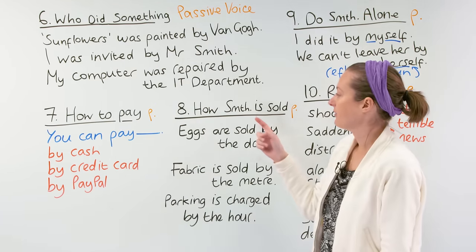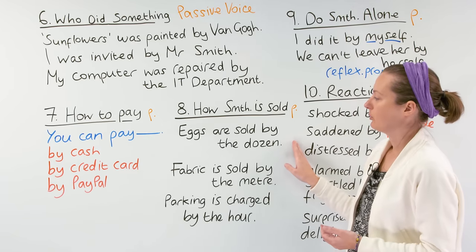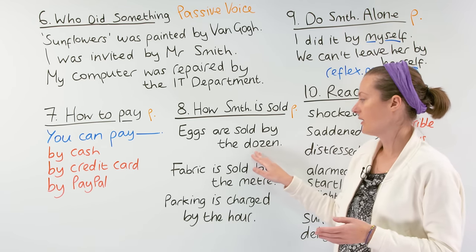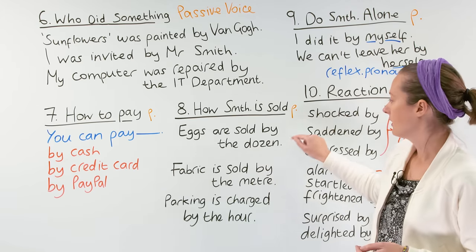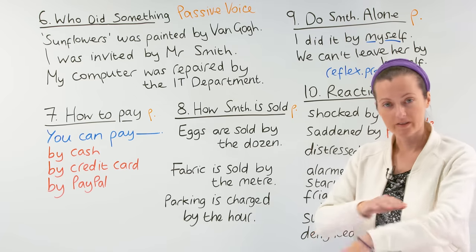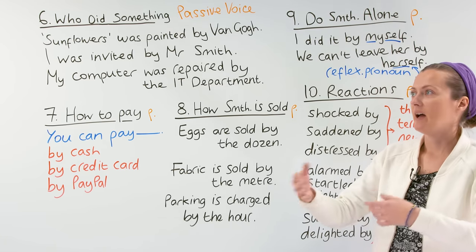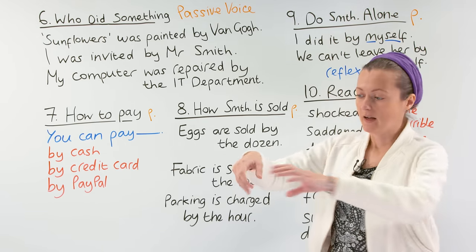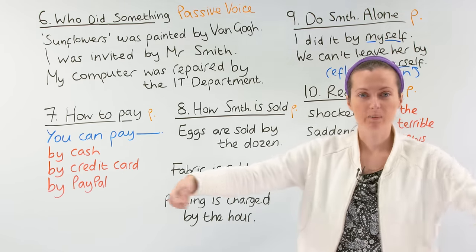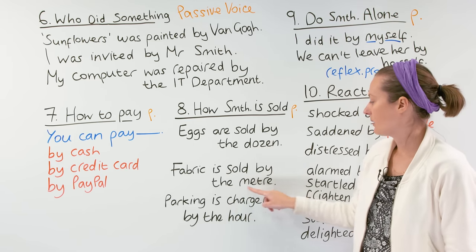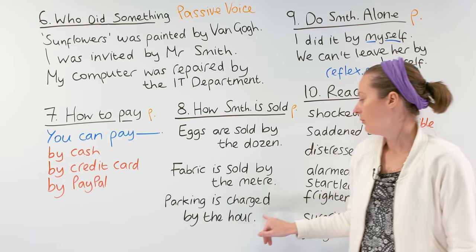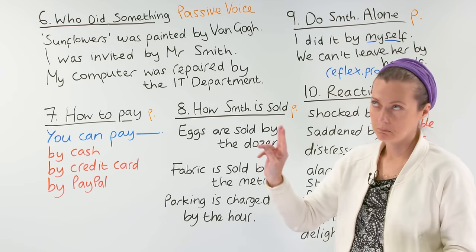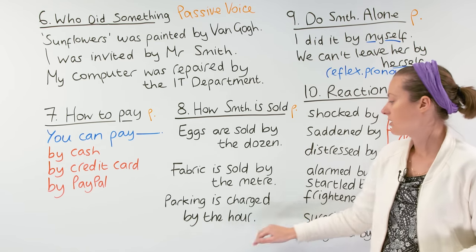Next we have how something is sold. Did you know that in England, eggs are sold by the dozen? A dozen means 12 eggs. Fabric — the material that makes our clothes and furniture like sofas — is sold by the meter. You go in the shop, the fabric is on rolls, and they ask how many meters you want. Another example: parking is charged by the hour — every hour you must pay two pounds to park your car.